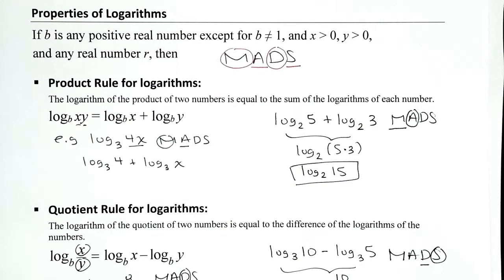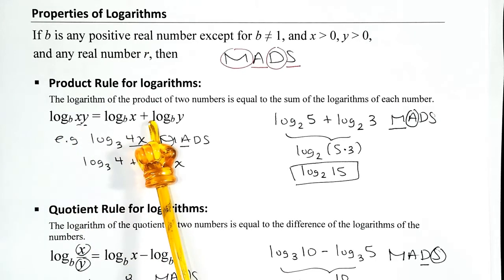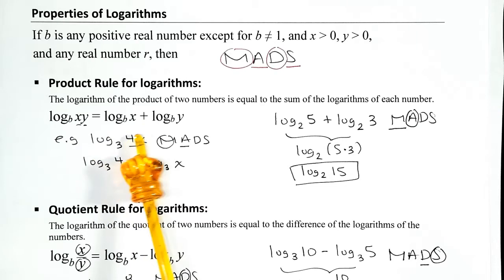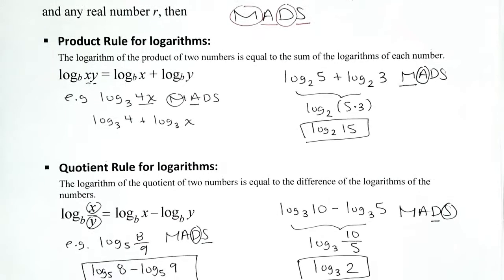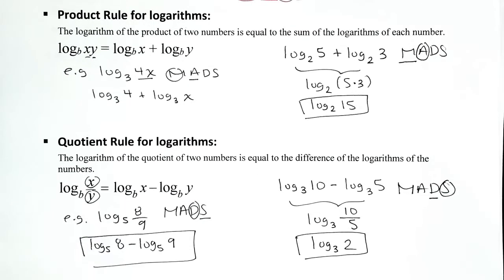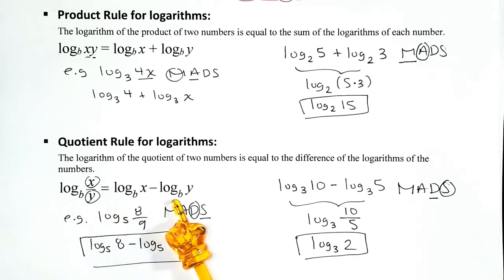The product rule for logarithms says: if you have the logarithm of a product, you can split it as a sum — logarithm of the first factor plus logarithm of the second factor. If you have the logarithm of a quotient, you can split it as logarithm of the numerator minus the logarithm of the denominator.